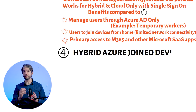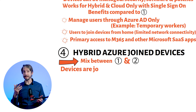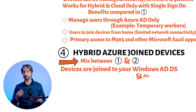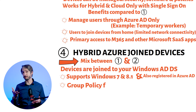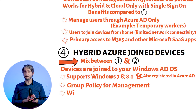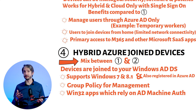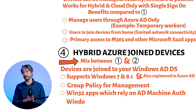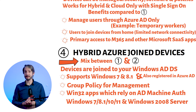Fourthly, we have hybrid Azure AD joined devices, which is a mix of the first and the third option. The devices are joined to your Windows Active Directory domain and are also registered in Azure AD. This is useful for supporting older devices running Windows 7 and 8.1, if you want to use group policy for management, or if you have Windows 32 apps which rely on Active Directory machine authentication. This setup requires connectivity to your Windows Active Directory domain controllers. It supports Windows 7, 8.1, Windows 10 and newer, along with Windows Server 2008 and newer.